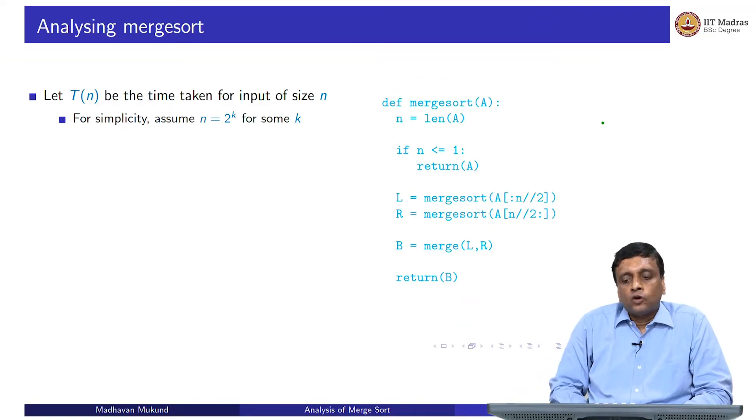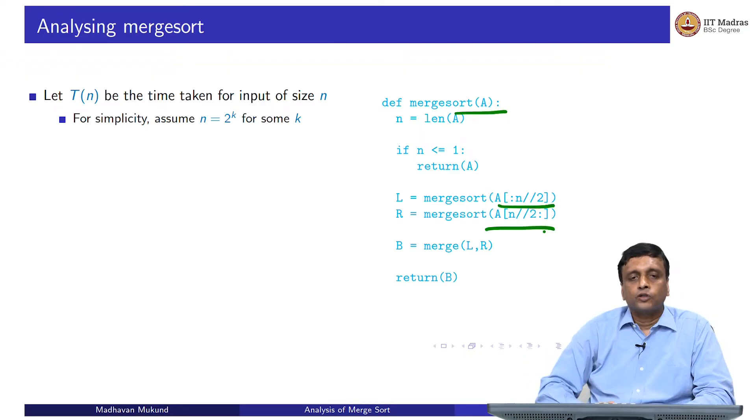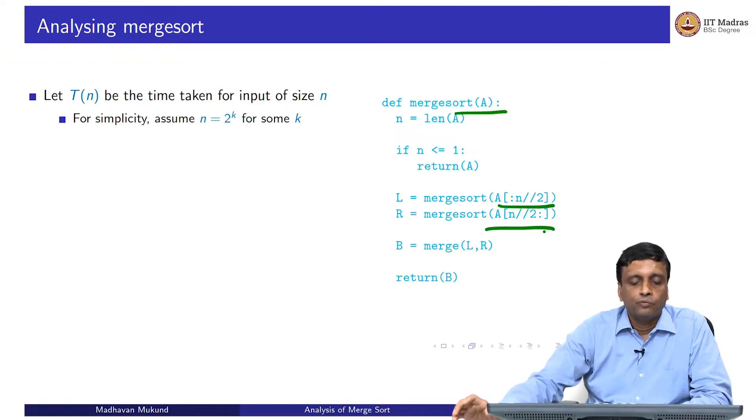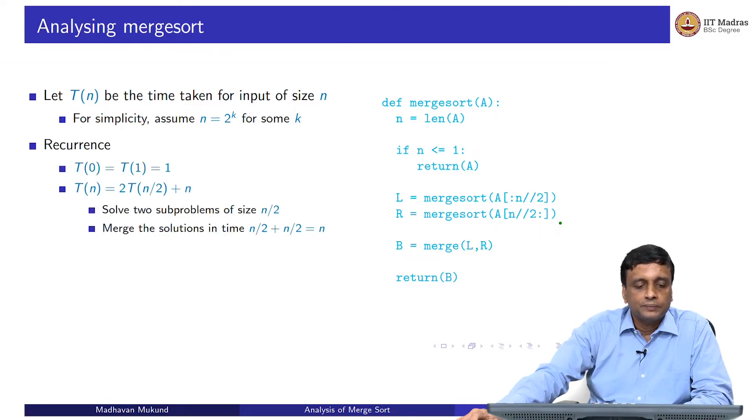Now what about merge sort? Merge sort is a recursive algorithm. Merge sort of A requires me to solve merge sort of half of A. Let us first of all assume that the n that we are dealing with, because we are going to keep dividing by 2, let us assume that the n we are dealing with is actually a power of 2. Every time we divide by 2, we will come down nicely to a number in some uniform way. So T(n) is what we want to calculate, where we are assuming n is actually of the form 2 to the power k. It does not really matter as you will see for the analysis, but it is simpler to calculate in this way.